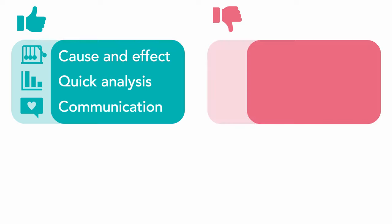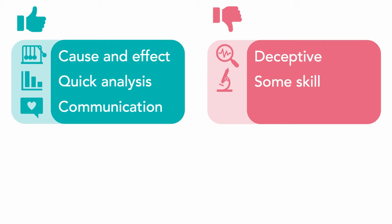Now the cons. The Pareto chart is designed to identify the vital few and does that job pretty well. But if I were picky, you can fall into the trap of becoming over-reliant on surface-level metrics — remember it only tells part of the story and you'll need to dig deeper. It does require some skill depending on the data you're analyzing. And because it's sometimes seen as a tool to identify an 80-20 ratio specifically, it can be misused. Remember, we're really looking for that disproportionate effect from the vital causes — not 80-20 per se.